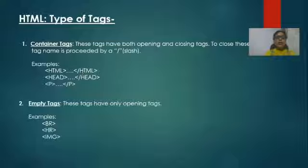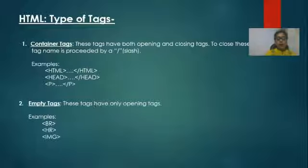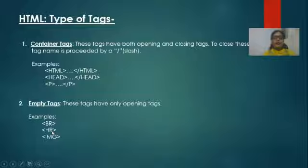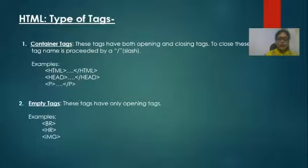The next type of tag is the empty tag. Empty tags have only the opening tag — they do not have a closing tag. A few examples of empty tags are: br, hr, and img. These are all empty tags, and you will study a few more empty tags in this chapter.